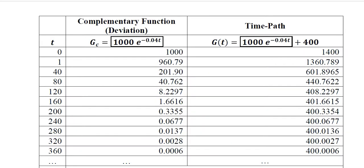Now we have the table in which we separately plot the values of complementary function and the time path on the whole. This is the complementary function part, and this is the complementary function part added with the particular integral, so we get the overall time path.